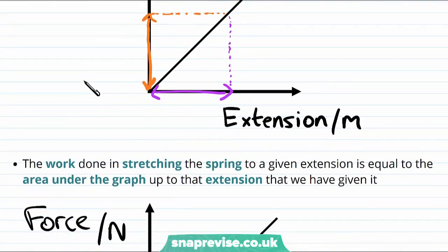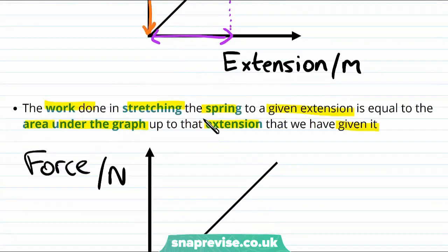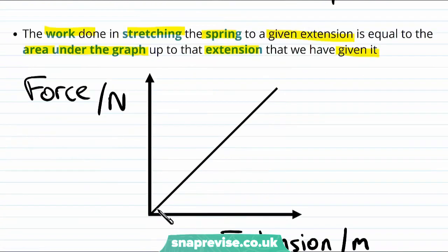Either way that it's phrased the work done in stretching a spring to a given extension is equal to the area underneath the graph up to the extension that we have given it. So that is if we want to know the work done in giving a spring this extension, then what we need to know is the area under the graph up to this extension. In other words the work done is this area here.